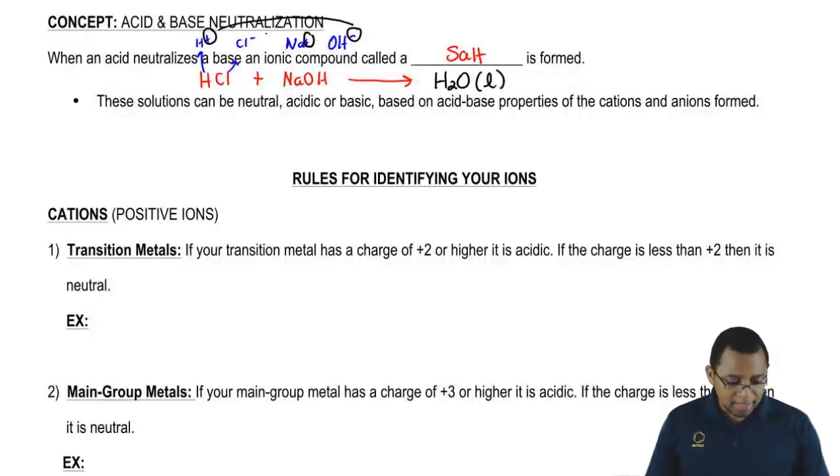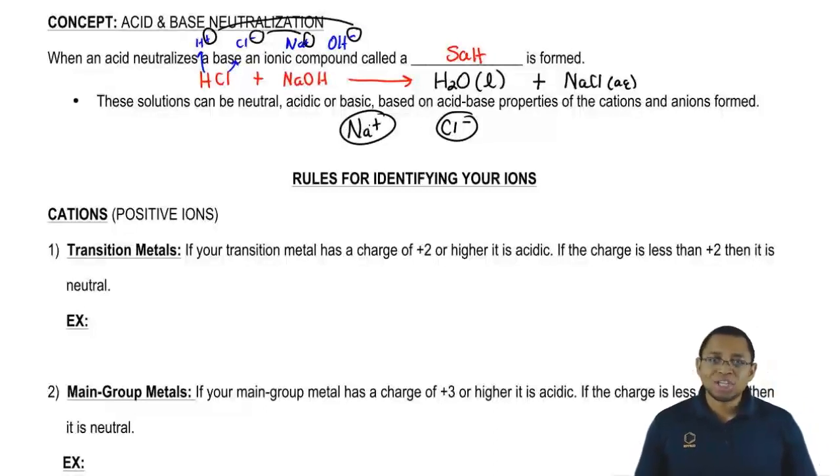Now, the Na positive and the Cl minus will be attracted to one another and they give us NaCl. We're going to say NaCl is our salt. It's basically the ionic product that results from the neutralization between an acid and a base. Now, we're going to say that this salt here, which is made up of Na positive and Cl minus, this salt can make our solution acidic, basic, or neutral depending on the rules that we're going to see in a few seconds from these two ions. That's the whole purpose of this section.